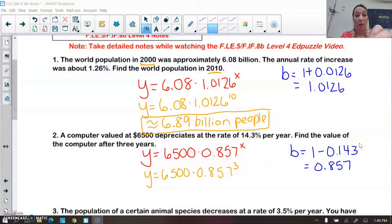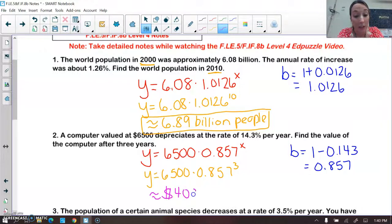And so then we're going to write our answer since we're talking about money. We're going to round to the nearest cent. So we have approximately equal to $4,091.25.